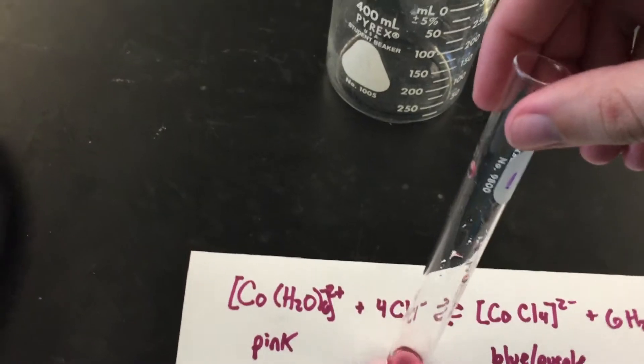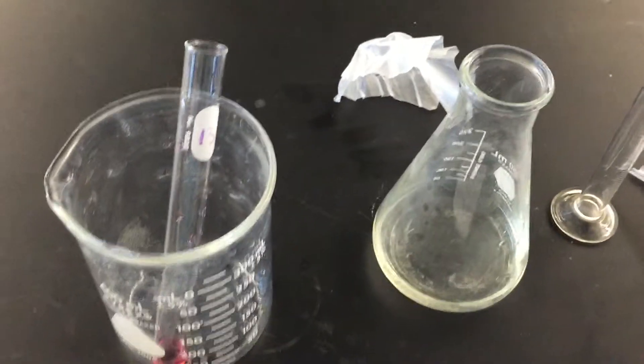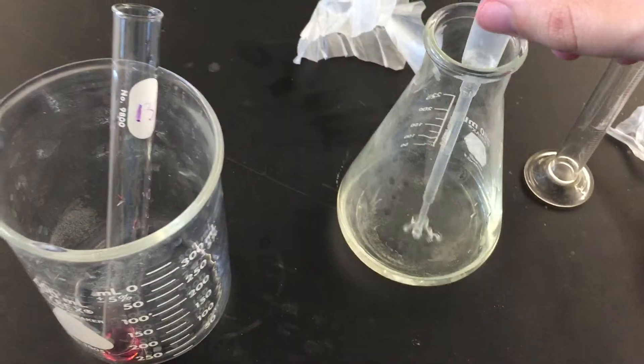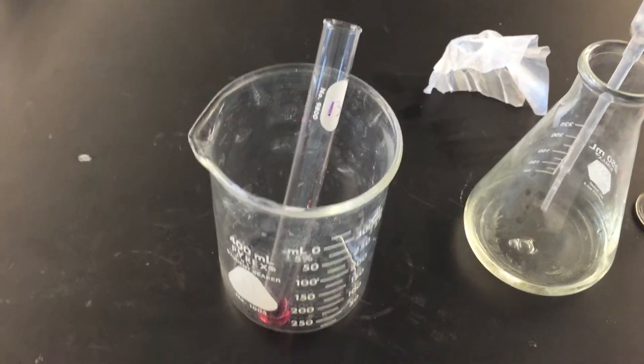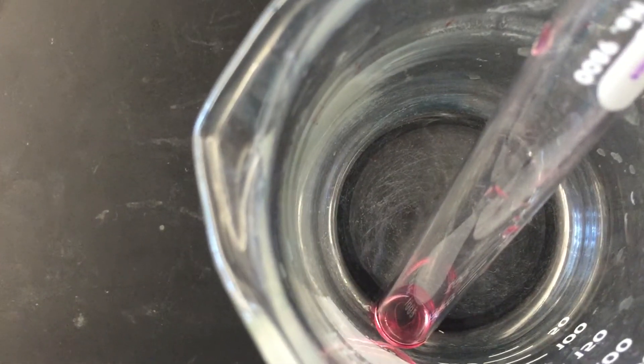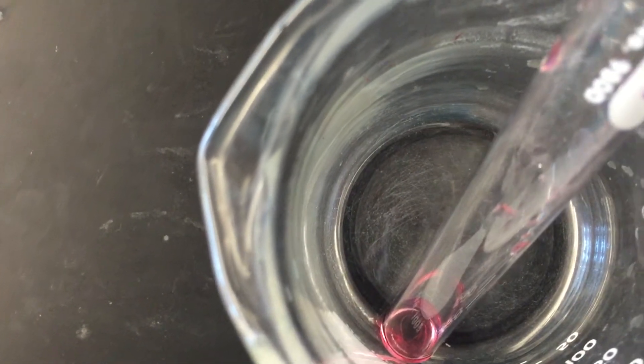What I'm going to do is add more Cl-. I'm going to use hydrochloric acid as my source of Cl-. Let's take a look inside our test tube while I add HCl.